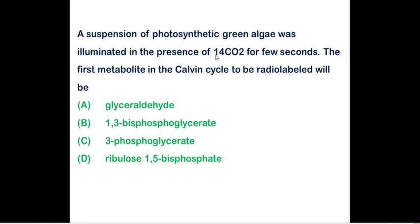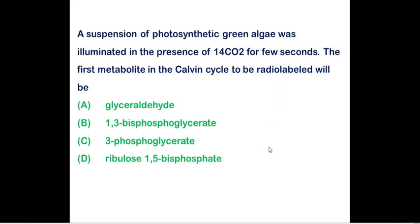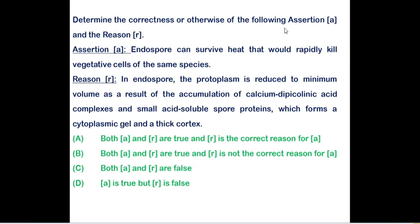A suspension of photosynthetic green algae was illuminated in the presence of 14CO2 for a few seconds. The first metabolite in the Calvin cycle to be radiolabeled: for me, option D is correct — ribulose-1,5-bisphosphate, which accepts the CO2 molecule during carbon fixation and then gives rise to a three-carbon intermediate, 3-phosphoglycerate. If you believe three-phosphoglycerate is correct, please let me know in the comments.